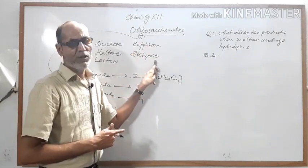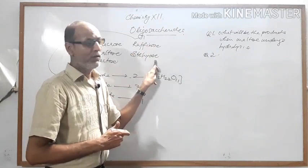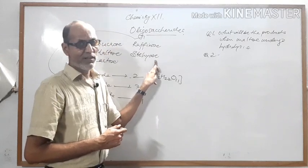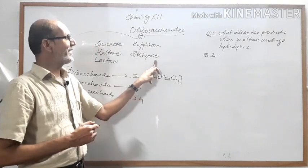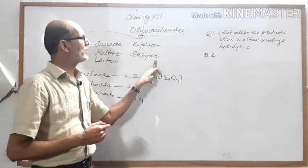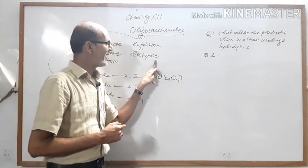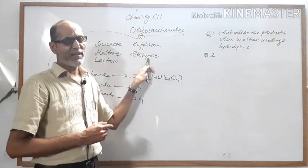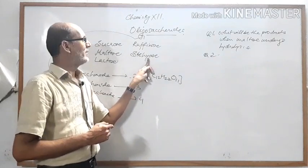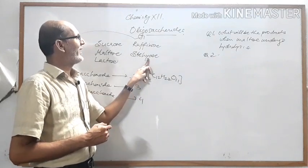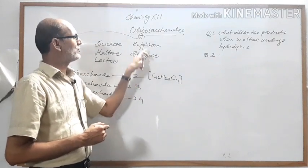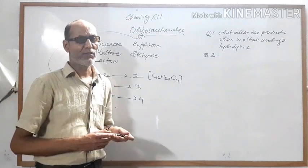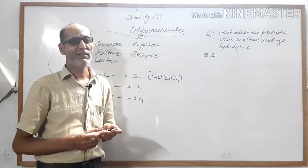Raffinose forms three monosaccharides and stachyose will form four monosaccharides. I think you have understood oligosaccharides. Now we move to the final type of carbohydrate — polysaccharides.